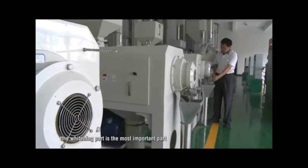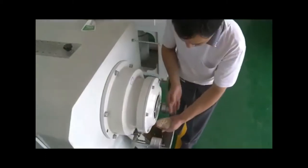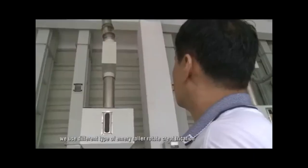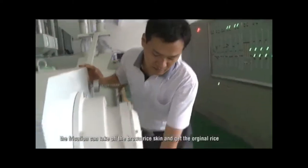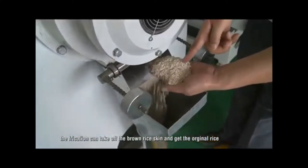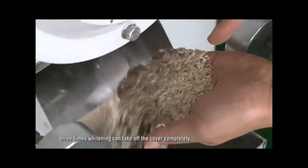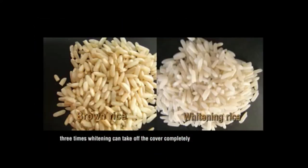We use different types of emery roller to rotate and create friction between emery roller and brown rice. This process can take off the brown rice skin and get the white rice. Three types of whitening can take off the cover completely.